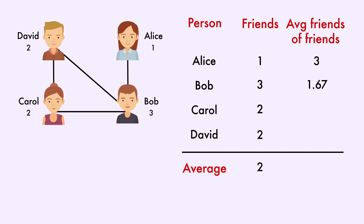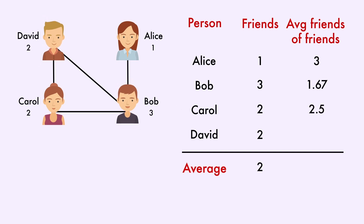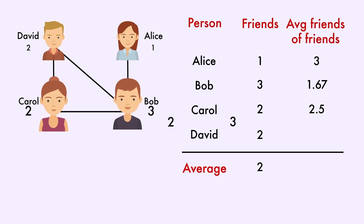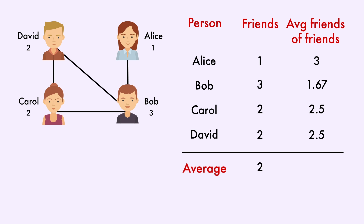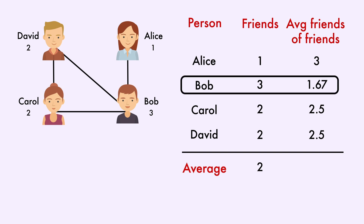So his friends actually aren't as popular as him, which isn't too surprising. Then Carol's friends have scores of two and three, leaving an average of 2.5. And for David, we see the same thing — his friends have a score of two and three, which yields an average of 2.5. As we can see, for most people, the average score of their friends is higher than their own score, or their friends are more popular. The only exception is Bob, which isn't surprising since he's the most popular.